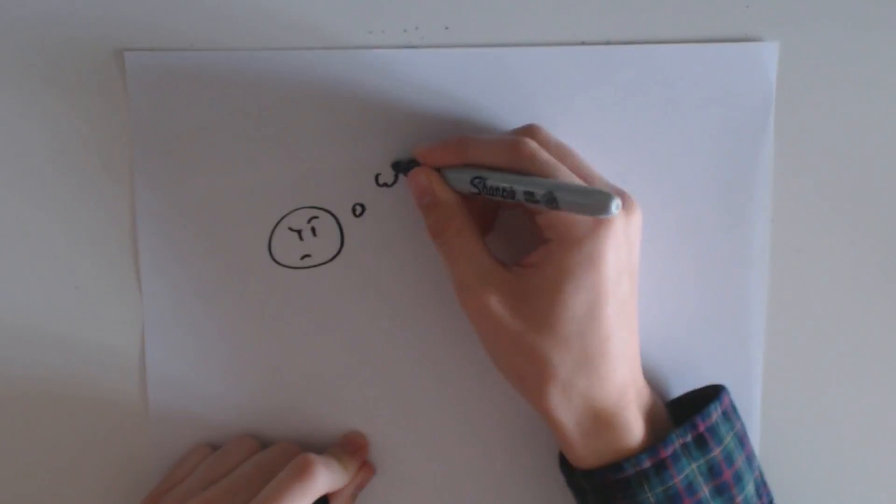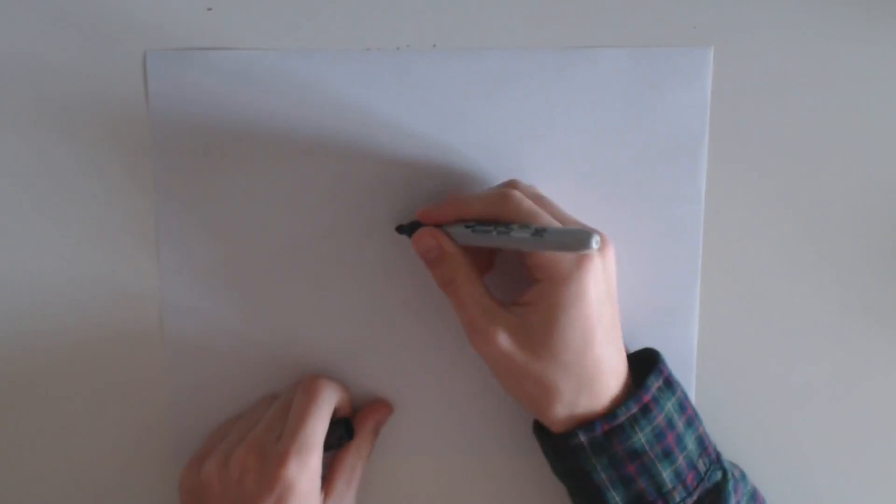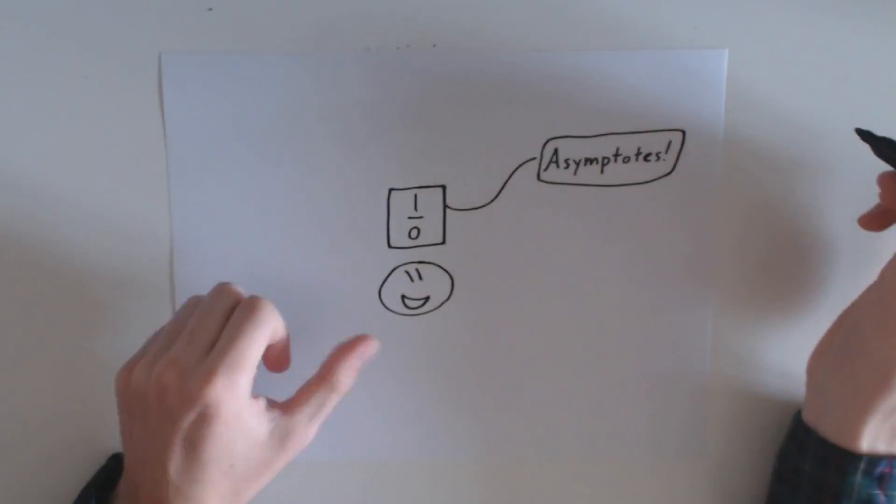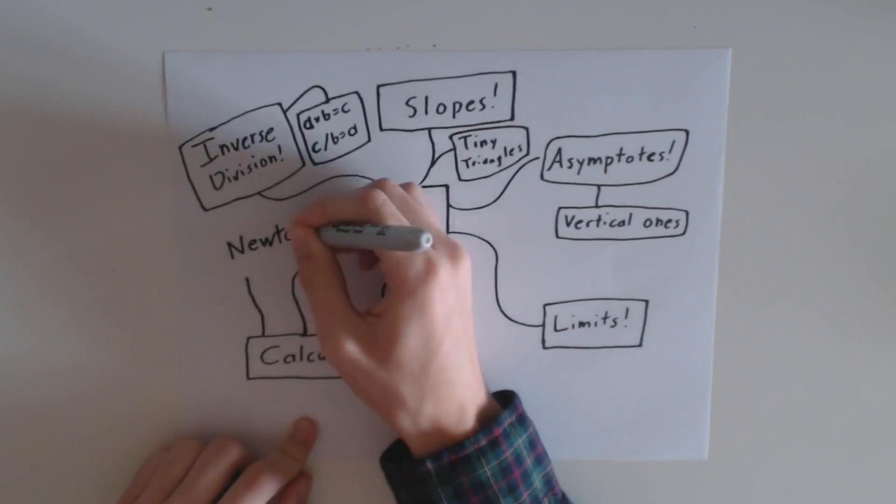In the end, I wasn't able to divide by zero. Algebra just doesn't allow it. But by trying to figure it out, I discovered an incredible trove of mathematical knowledge that I never would have found if I hadn't challenged my textbook.